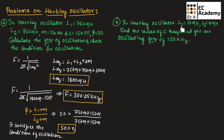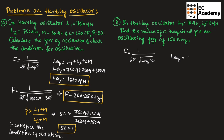In this Hartley oscillator problem, L1 is given as 10 µH and L2 is 10 µH. Here we need to find the value of C required for an oscillating frequency of 150 kHz. The frequency of oscillation is F = 1 / (2π √(L_eq × C)). Since mutual inductance is not given, L_eq = L1 + L2 = 10 µH + 10 µH = 20 µH.